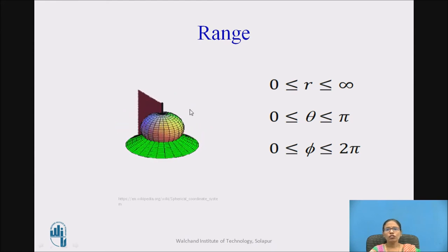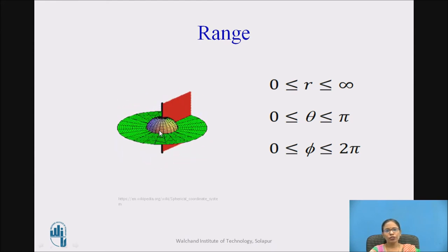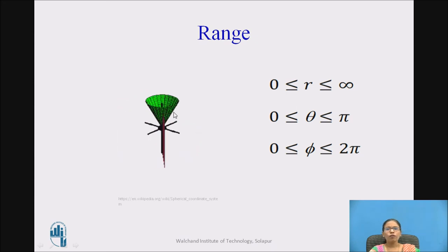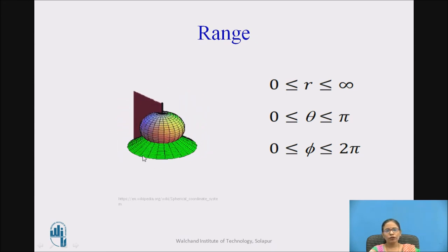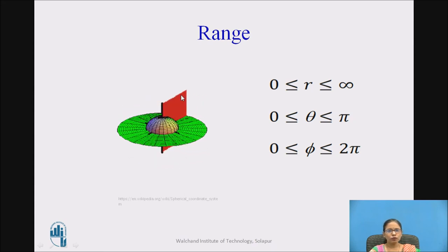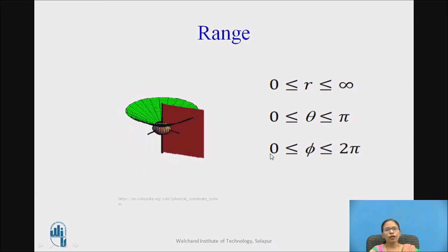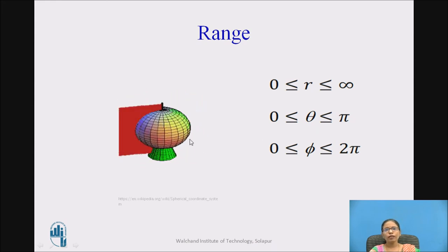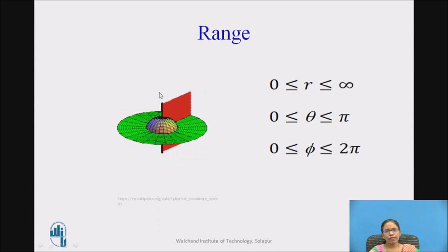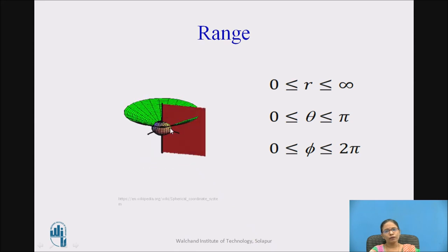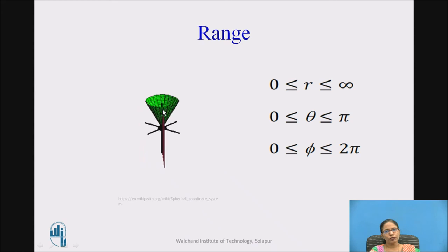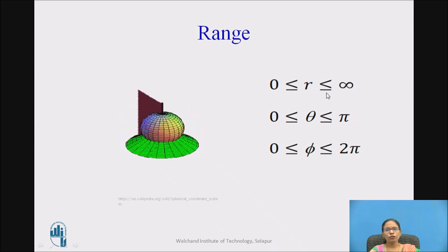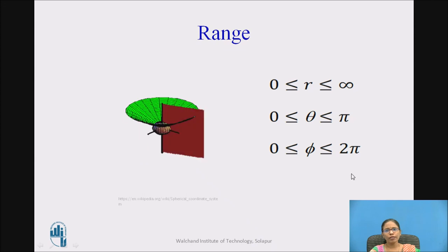Now I can write the ranges. The sphere's radius changes from 0 and can go to maximum, so r ranges from 0 to infinity. Phi is the same as in the cylindrical coordinate system — it moves through a complete circle of 360 degrees, so phi ranges from 0 to 2π. The middle coordinate in the spherical coordinate system is theta, not phi. Theta forms a cone measured with respect to the z-axis; its angle goes from 0 to 180 degrees, so theta ranges from 0 to π. Therefore: r is 0 to ∞, theta is 0 to π, and phi is 0 to 2π.